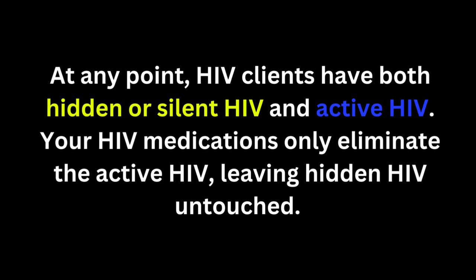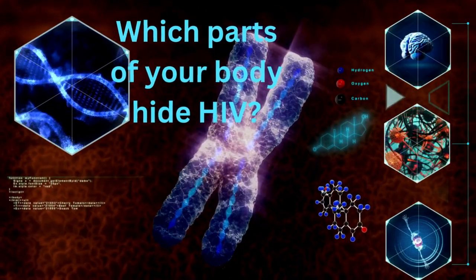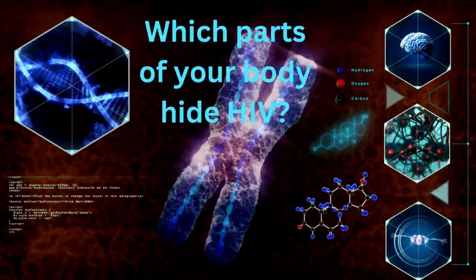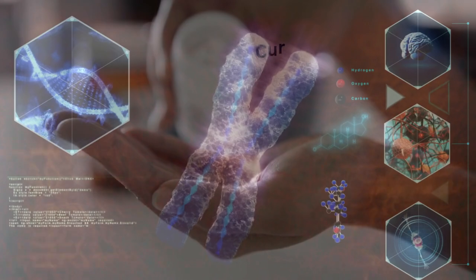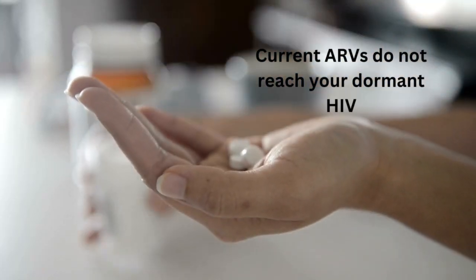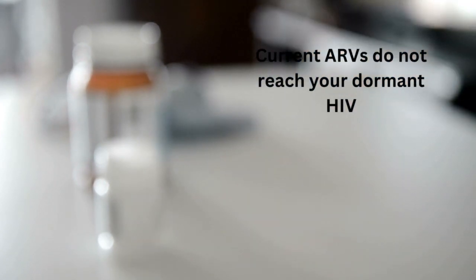Your HIV medications only eliminate the active HIV, leaving hidden HIV untouched. Hidden HIV or the HIV that hibernates in your body cannot be eliminated because it lies silently so that no medication can reach it. Today we do not have a complete cure because we have no HIV treatment that acts upon the dormant or hidden virus.